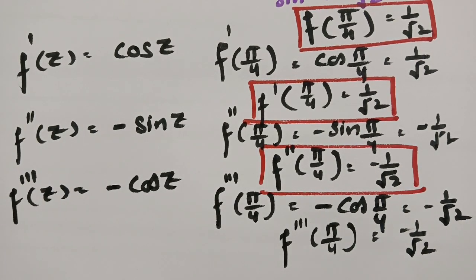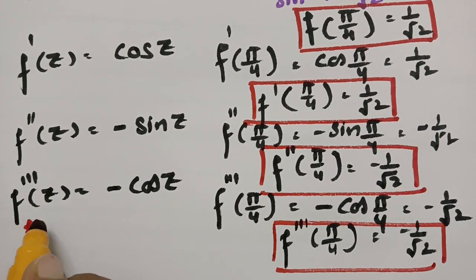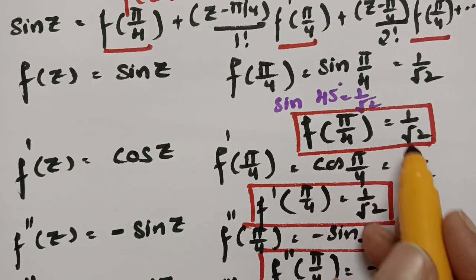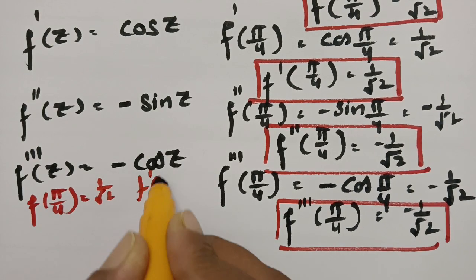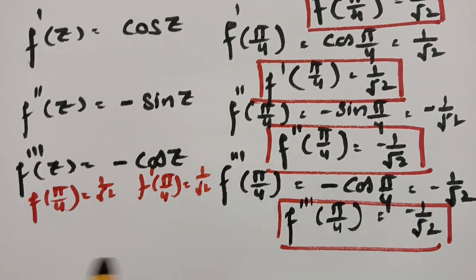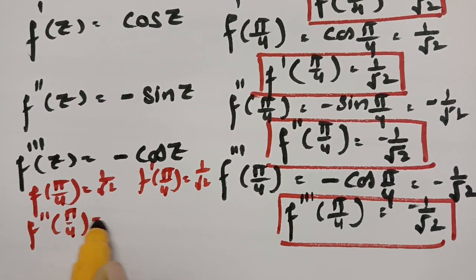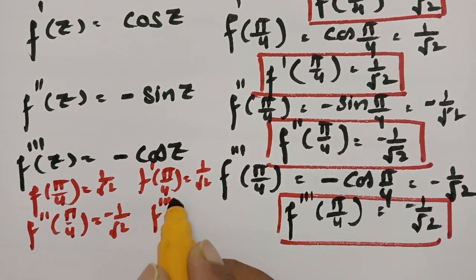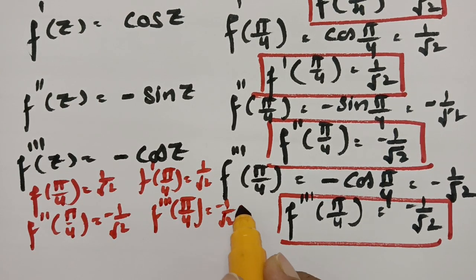Now we have all the values ready. f(π/4) = 1/√2, f'(π/4) = 1/√2, f''(π/4) = −1/√2, and f'''(π/4) = −1/√2, and so on.